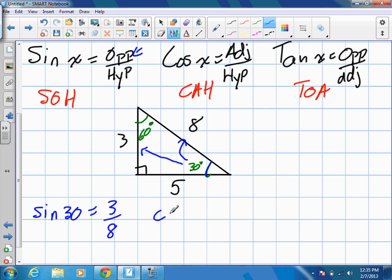So then, I don't care for you guys to solve it. I just want the ratio. So cosine 30, well, cosine is adjacent. What's the adjacent side? Five. Divide by the hypotenuse? Eight.